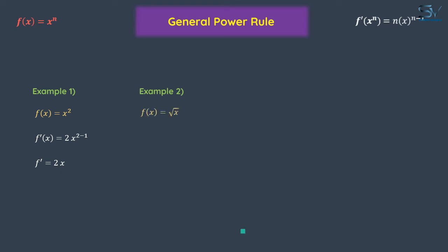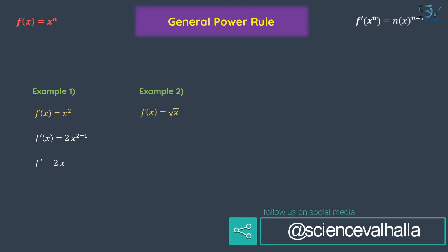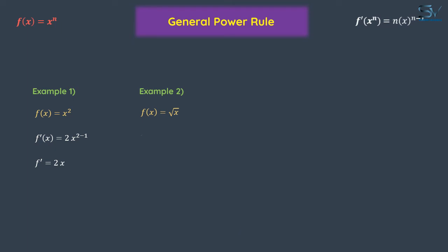What does the term square root mean? It means that x has been raised to power half. Repeat the process: bring the power to the front and reduce the power by one. Half minus one is minus a half. Because its power is negative, then it will go to the denominator.